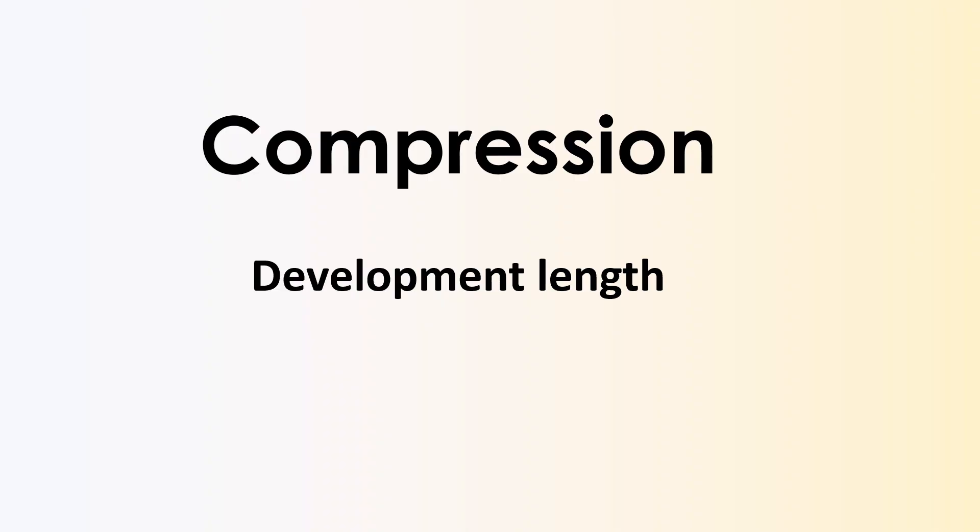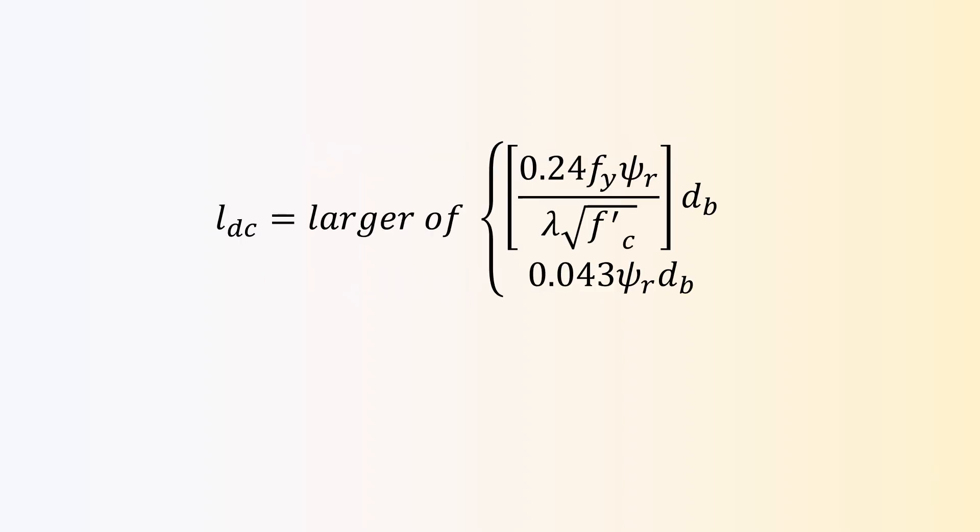For the development length for compression, there is not much to discuss because the procedure is quite similar with tension, but using different formula. The development length for compression, Ldc, is the larger between number 1, 0.24 times fy times ψr, also known as confinement modification factor, divided by lambda square root of fc' times db, and number 2, 0.043 of ψr times db. We'll talk about ψr in a sec.